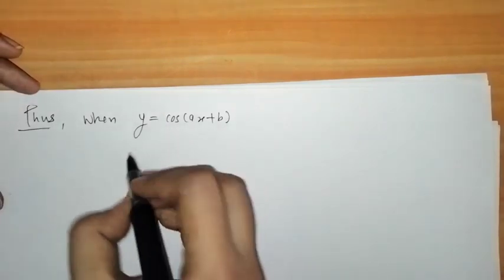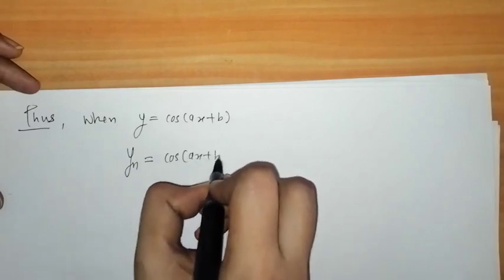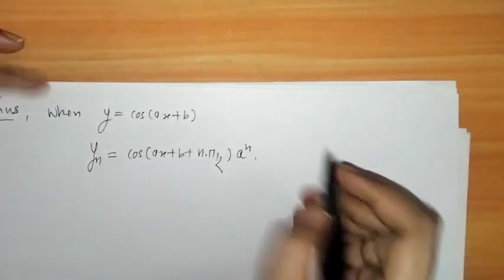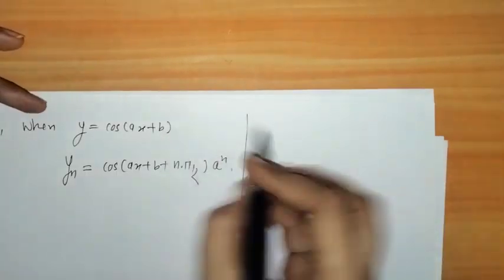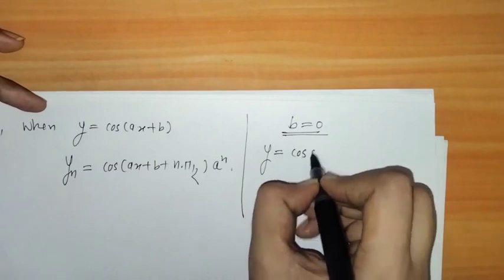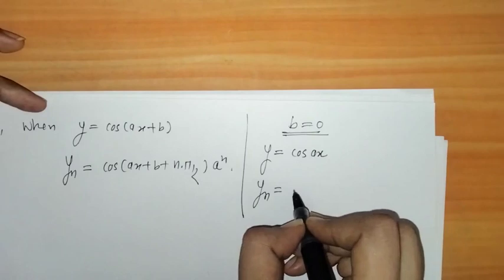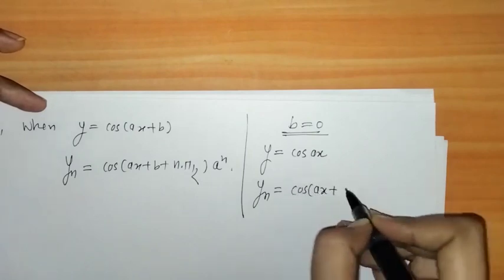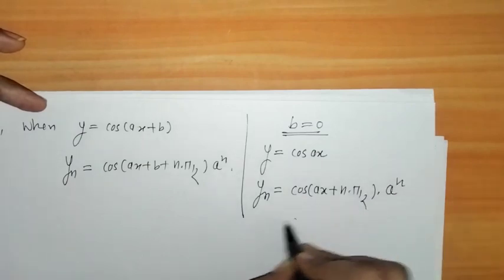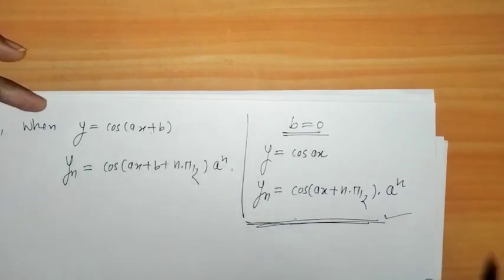When y = cos(ax + b), its nth derivative is yn = cos(ax + b + nπ/2) · aⁿ. As a special case, when b = 0, we have y = cos(ax), and its nth derivative is cos(ax + nπ/2) · aⁿ.